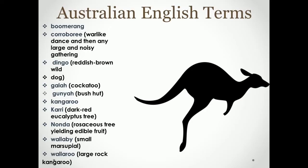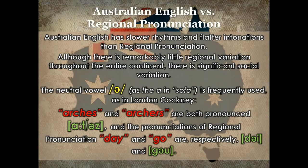Some Australian English terms came from aboriginal speech. Australian English has slower rhythms and flatter intonations than RP. Although there is remarkably little regional variation throughout the entire continent, there is significant social variation.